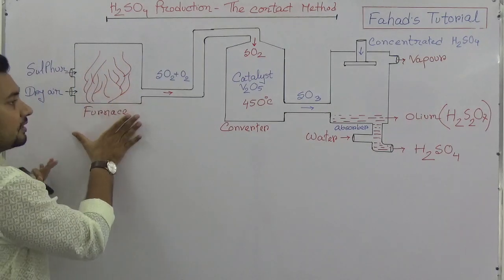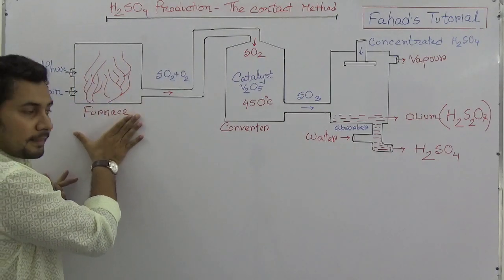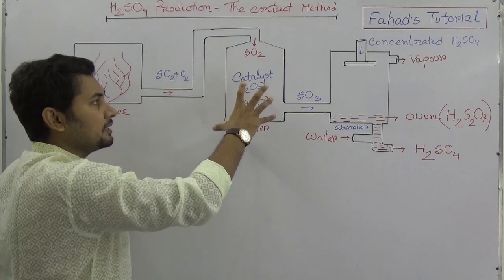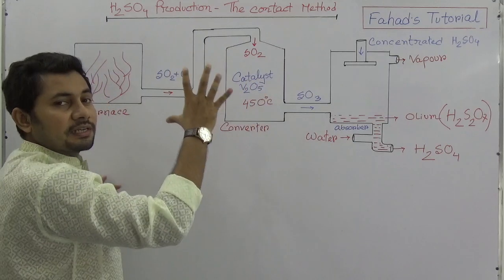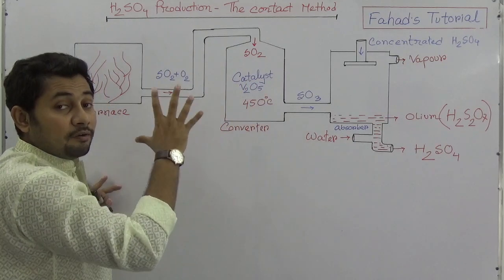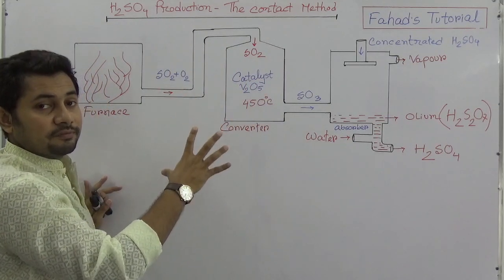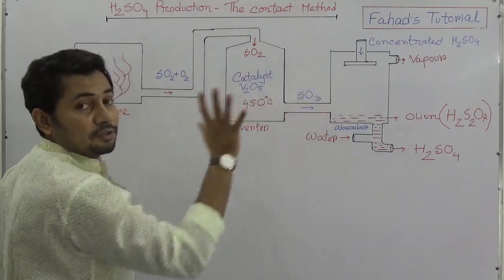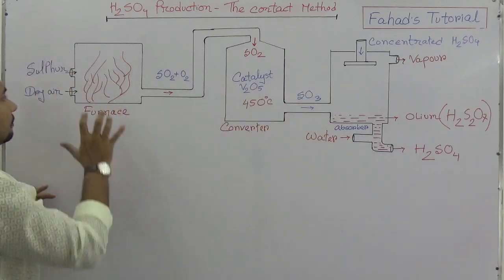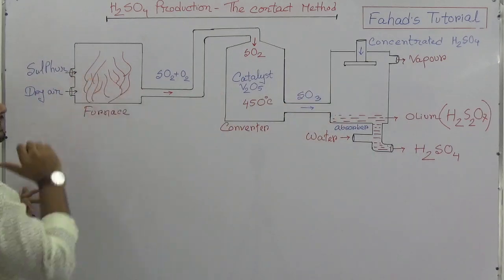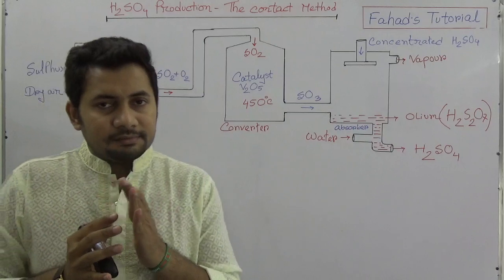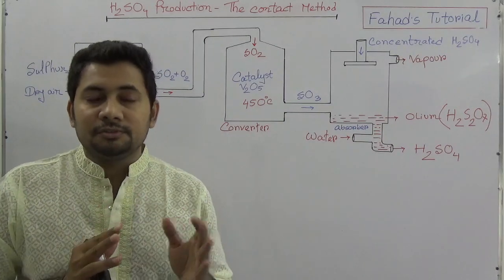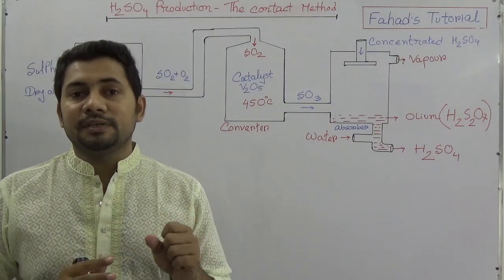Think about this: there is a furnace, and then a converter — also a furnace but hugely heated to 450 to 500 degrees Celsius — and then there is an absorber. There are some steps we need to follow to produce H2SO4.